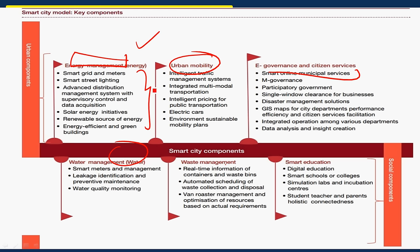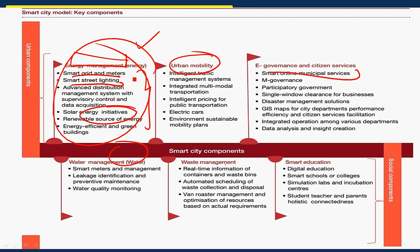In the area of energy management, smart cities adopt smart grid meters to prevent electricity theft. They implement smart street lighting with automatic switching on and off, advanced distribution management systems, adoption of solar and renewable energy sources, energy efficiency measures, and adoption of green buildings. These are the smarter solutions to energy management in a city.